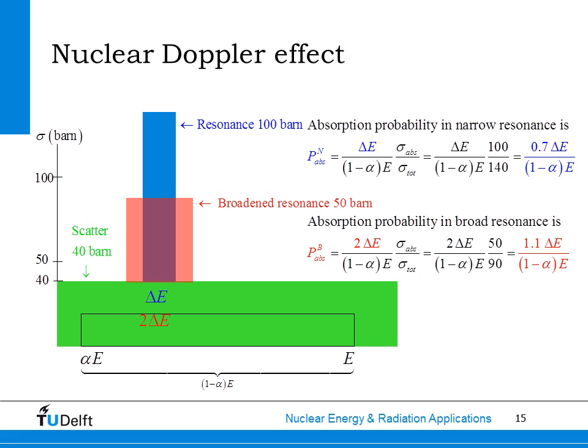But there is another important effect. The ratio of absorption probability for the broad resonance to the narrow resonance is now 1.1 divided by 0.7, which equals 1.6. This value is considerably lower than the 1.9 shown before for a scatter cross-section per absorber atom of 5 barn. From this we can conclude that the reactivity feedback coefficient due to the nuclear Doppler effect reduces when the scatter cross-section per absorber atom increases, which can be achieved by increasing the moderator-to-fuel ratio in the reactor core.